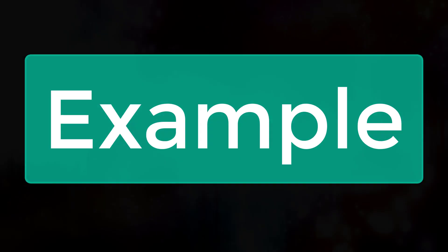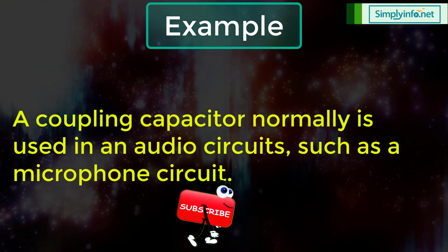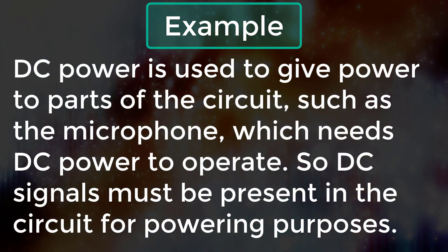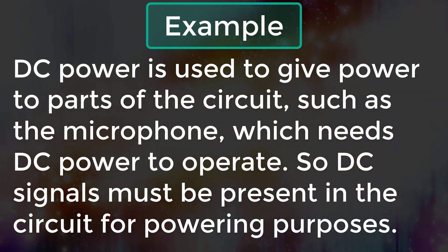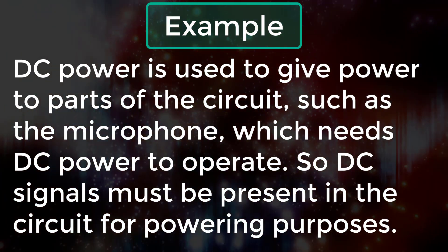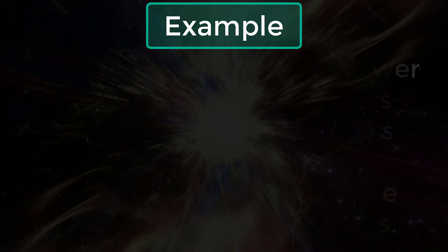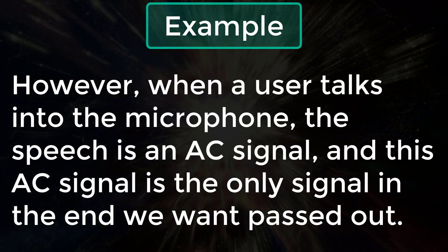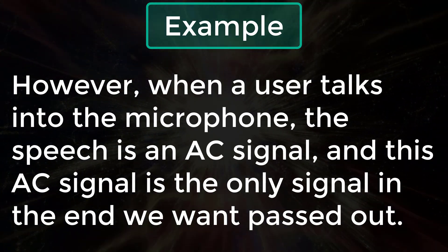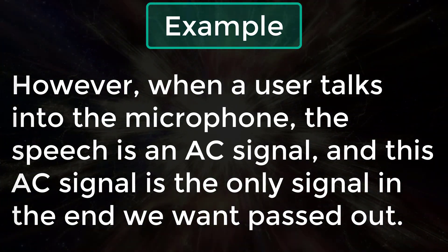Let's take an example. A coupling capacitor is normally used in an audio circuit such as a microphone circuit. DC power is used to power parts of the circuit such as the microphone, which needs DC to operate, so DC signals must be present for powering purposes. However, when a user talks into the microphone, the speech is an AC signal and this is the only signal that needs to be passed out in the end.